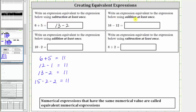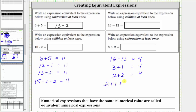The next problem, we're asked to write an expression equivalent to the expression below using addition at least once, and we are given the expression 16 minus 12, which is equal to four. So now we need to write an equivalent expression using addition that's equal to positive four. For example, three plus one is equal to four, or two plus two is equal to four, or we could write two plus one plus one is equal to four. Any of these expressions involving addition are equivalent to 16 minus 12. Let's go ahead and just use two plus two.